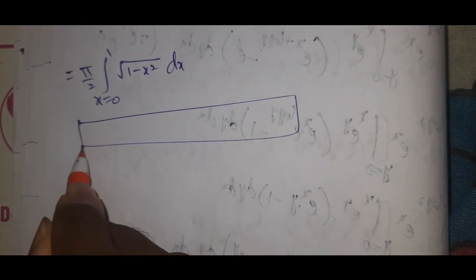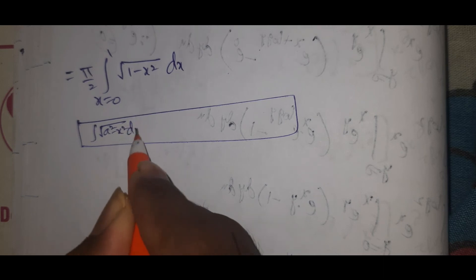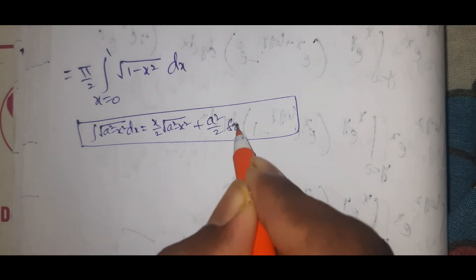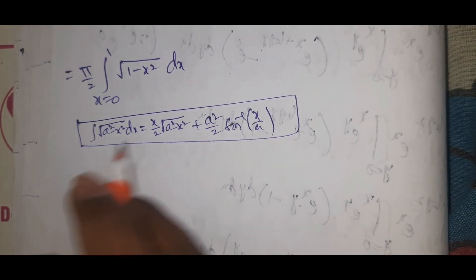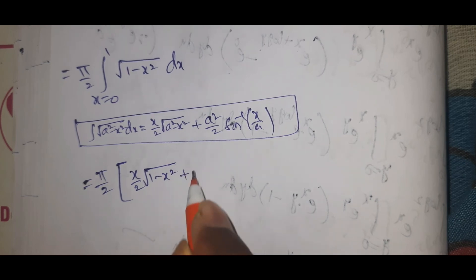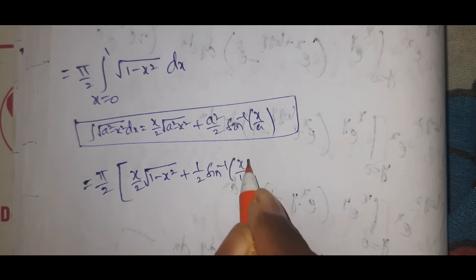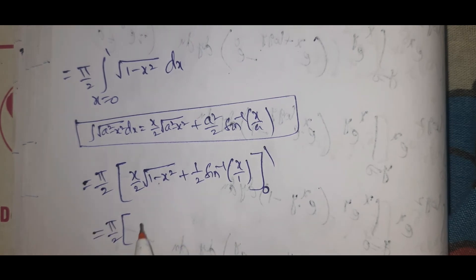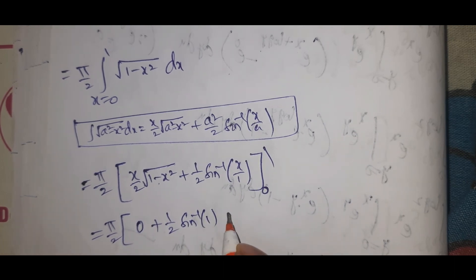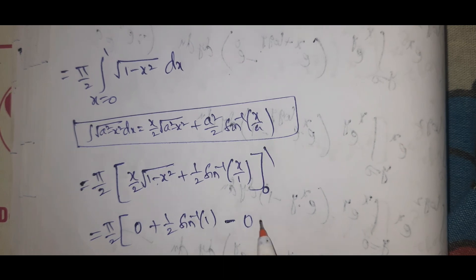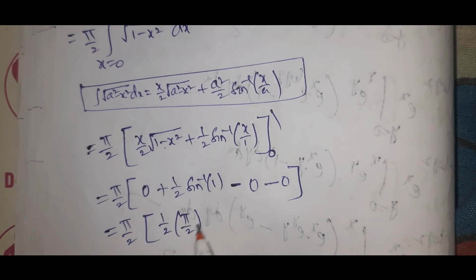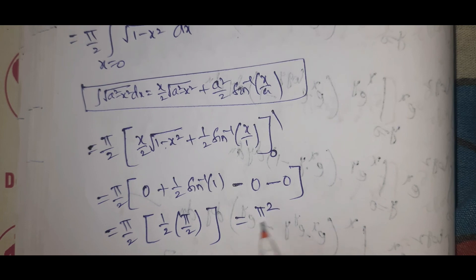Using the formula ∫ √(a²−x²) dx = (x/2)√(a²−x²) + (a²/2) sin⁻¹(x/a), with a = 1, we get π/2 · [(x/2)√(1−x²) + (1/2) sin⁻¹(x)] from 0 to 1. At x = 1: (0) + (1/2)(π/2) = π/4. At x = 0: 0. So the result is π/2 · π/4 = π²/8.